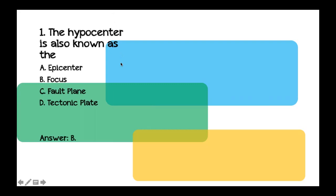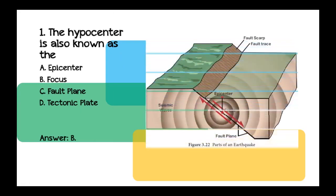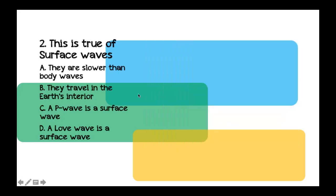The answer is B — focus. The focus is the interior origin of the earthquake and is also known as the hypocenter. Next question: Which is true of surface waves? A) They are slower than body waves. B) They travel in the earth's interior. C) A P wave is a surface wave. D) A Love wave is a surface wave.